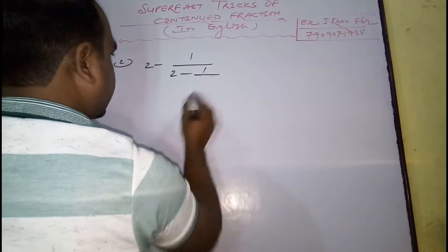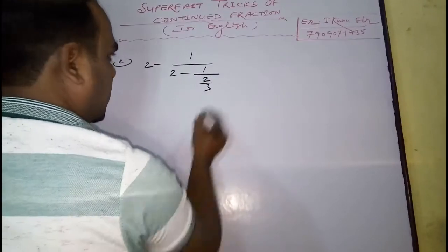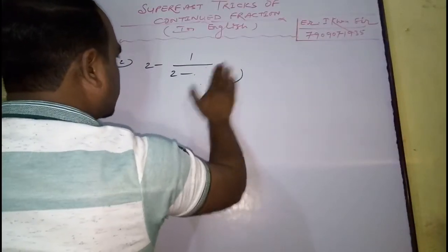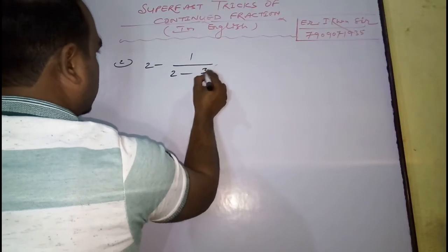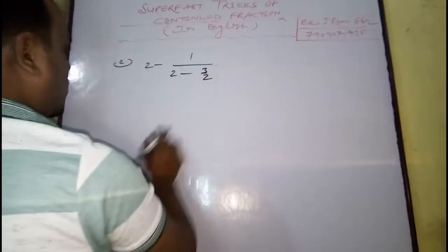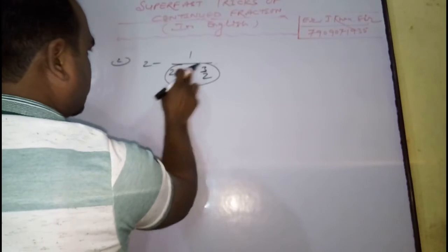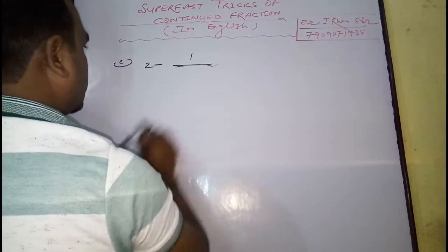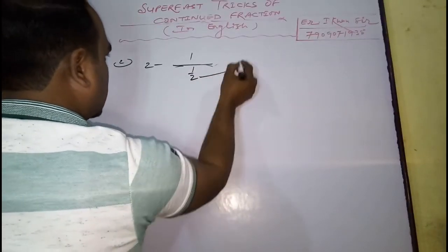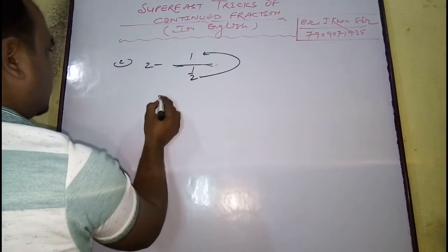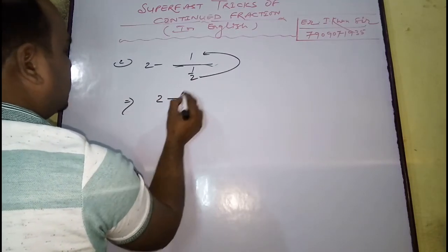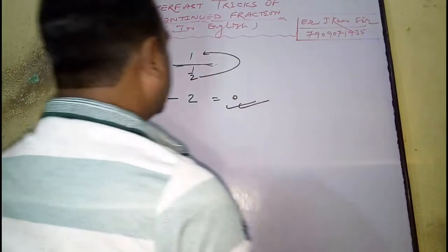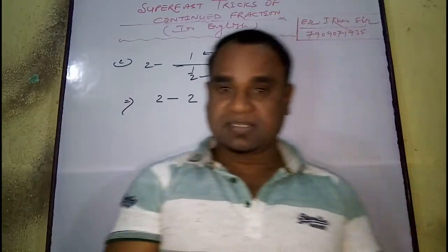Now it will become 2 by 3, and this 3 will go as numerator, making it 3 by 2. Now solve this fraction and you will get 4 minus 3, giving 1 by 2. And these 2 will go as numerator. Now it will be 2 minus 2, which equals 0. And that will be your answer. It is so simple.